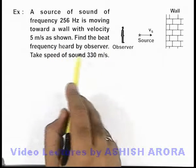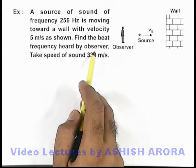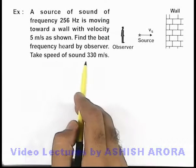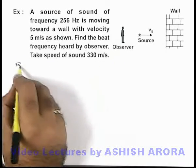We are required to find the beat frequency heard by the observer, and we can take the speed of sound to be 330 meters per second.